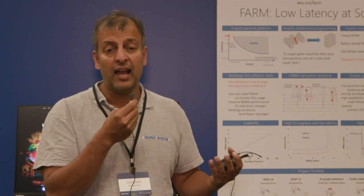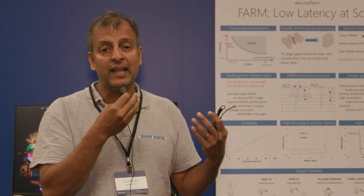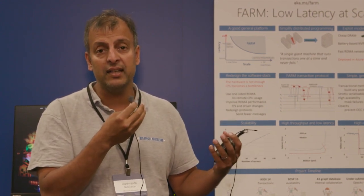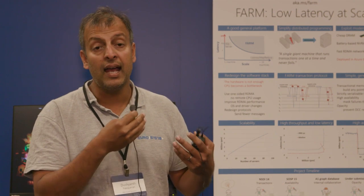Farm makes it easy to build low latency scale out applications by hiding the things that make distributed applications hard, which is concurrency, failures, and data distribution. So Farm abstracts this away and provides the programmer with the abstraction of a single machine that pools the resources of the entire cluster, runs transactions one at a time, and doesn't fail.